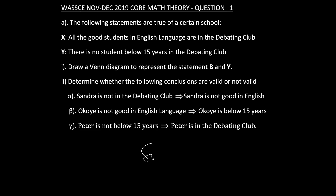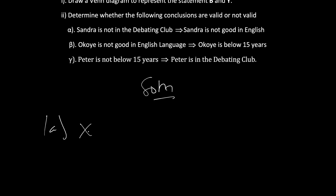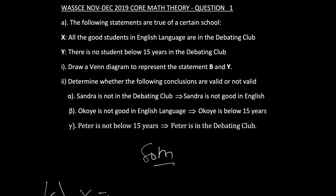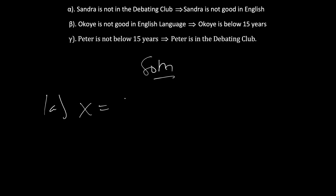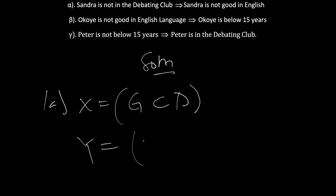So let's begin with our solution. For X, all good students in English language are in the debating class, so all good students are a subset of the debating class. For Y, there is no student below 15 years in the debating class, meaning students below 15 are not in the debating class.